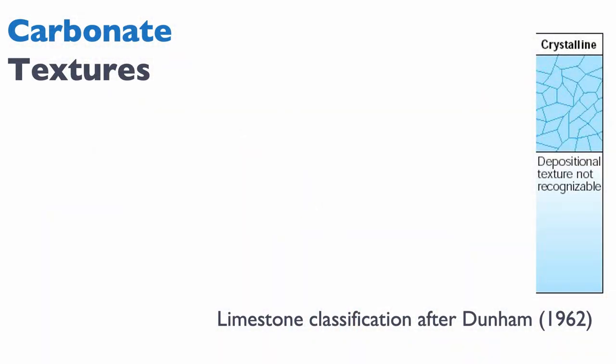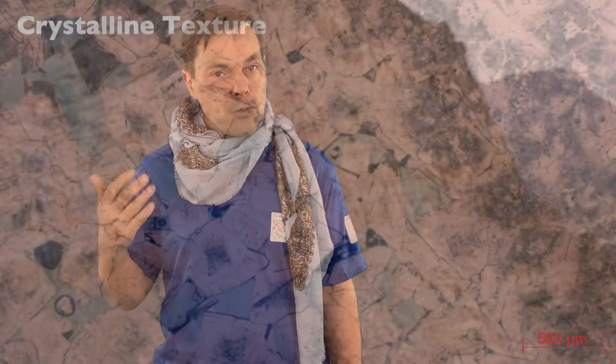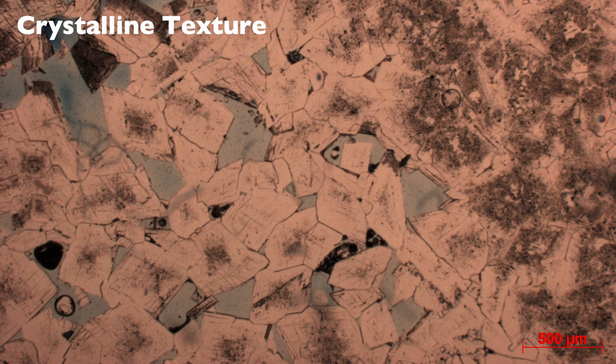If you cannot distinguish the original texture, you have a problem because you cannot apply the Dunham classification. In that case, you call this a crystalline rock, and you essentially give up in terms of Dunham — you cannot reconstruct the environment of deposition. That's a problem because the environment of deposition is at the base of everything we do in sequence stratigraphy and sedimentology. Here's an example: a dolomite where the original texture of the limestone is completely lost, leaving only large crystals of dolomite. No original texture remains, so we can only call this a crystalline texture.